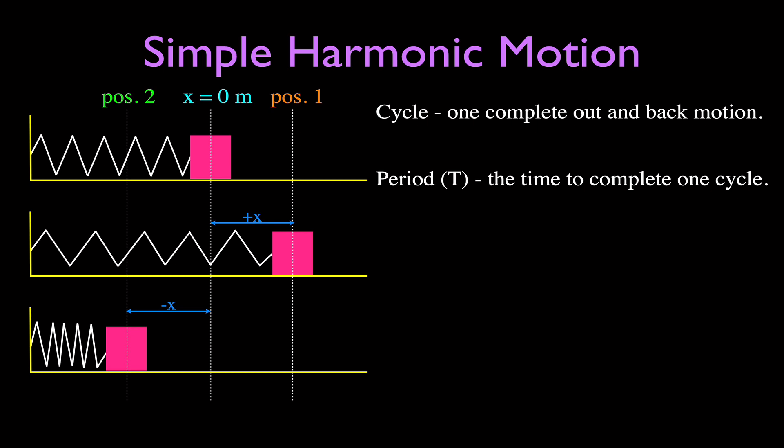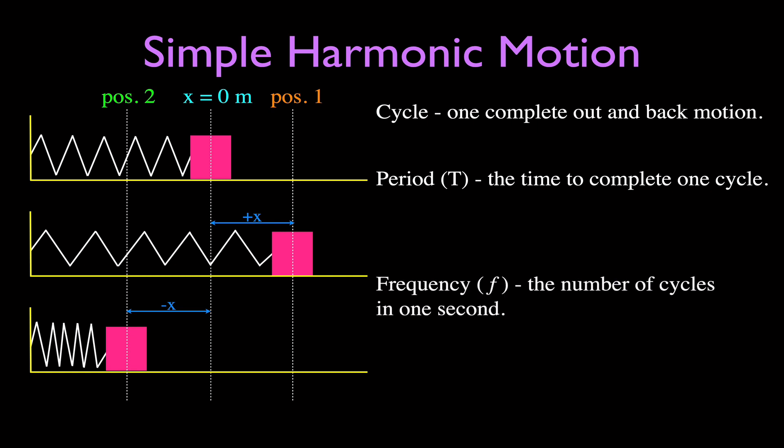The period, given the symbol capital T, is the time for the object to complete one cycle — the time it takes to do one back-and-forth motion. The frequency is the number of cycles, or back-and-forth motions, that occur in one second. There's a special relationship: the period is one over the frequency, so they are inversely proportional, and the frequency is one over the period.